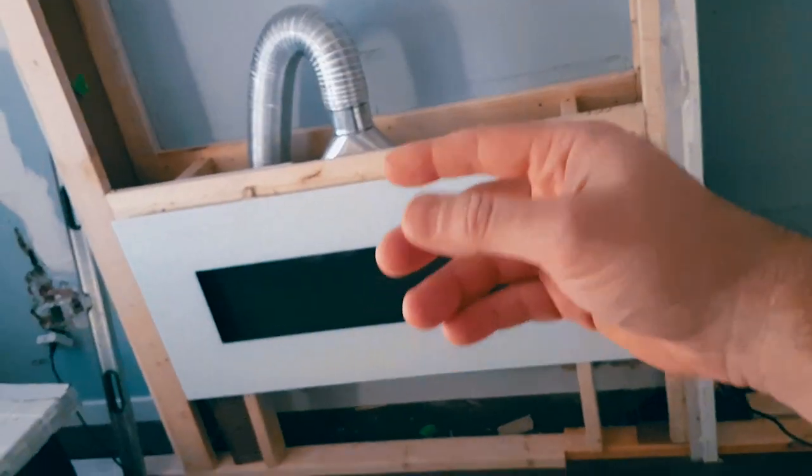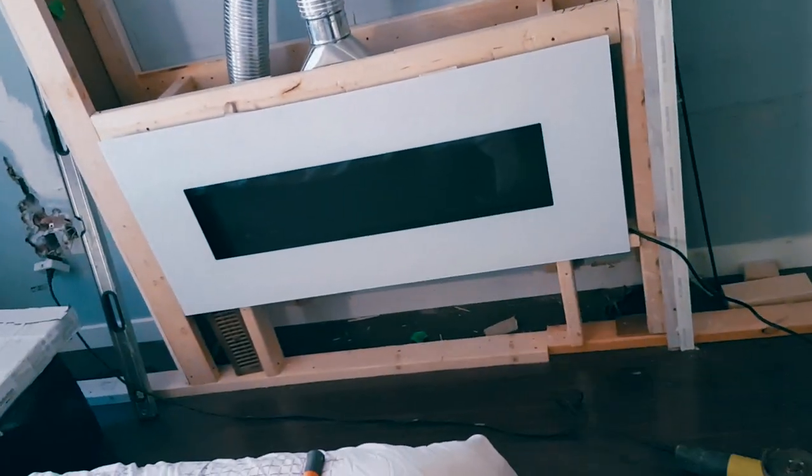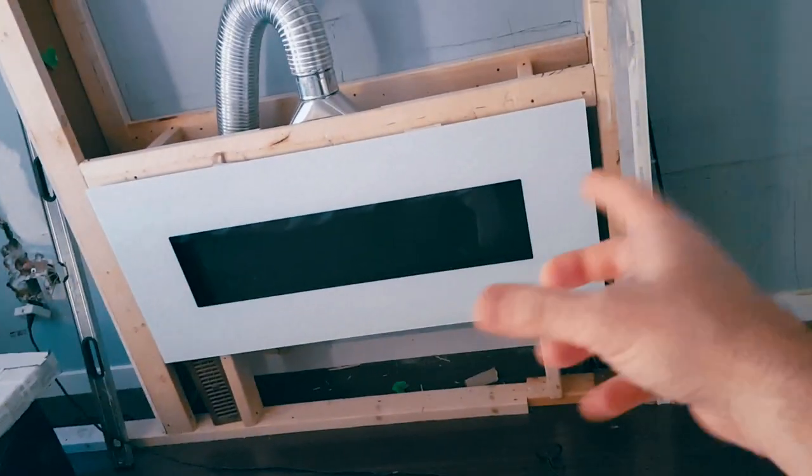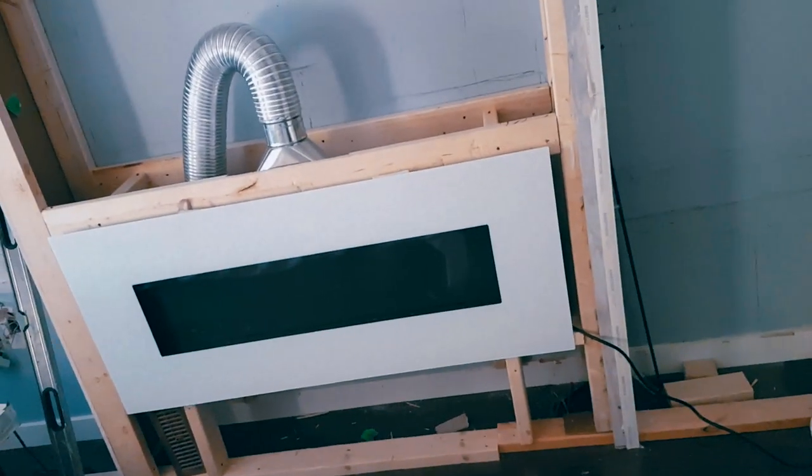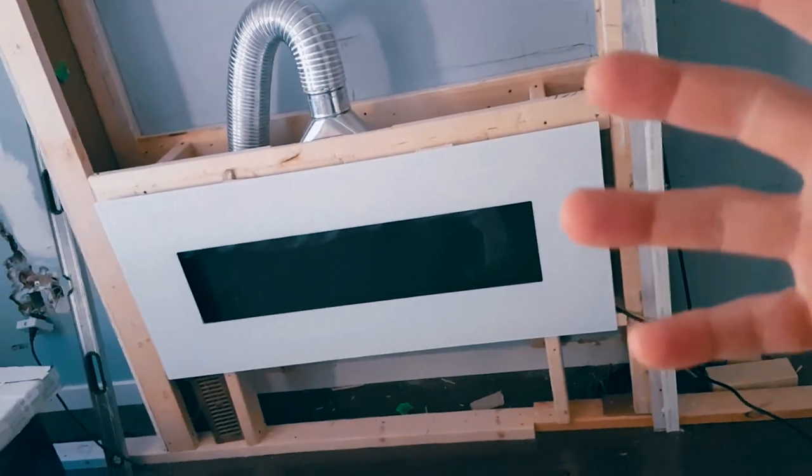When you're building out your ducting system you want to decide where is the actual vent going to be. Are you going to have it at the bottom, are you going to have it on the side, you're going to have it on both sides. It's really up to you. Now make sure that you have something that can handle the heat.